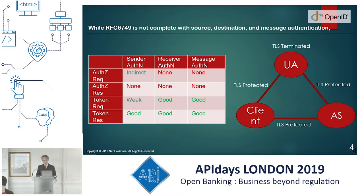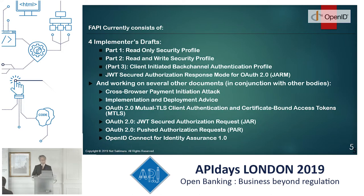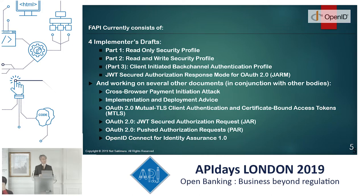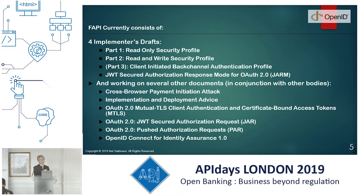What FAPI tries to address is to secure all these points and make them green. We have four implementer drafts. Implementer drafts means that the IPR is fixed and it's mostly done, but we still need to implement and get feedback from implementers to fix or fine-tune. At the OpenID Foundation, we always do multiple implementer drafts, incorporating implementation experiences. We write the specification in human language, trying to be precise, but there can still be some difference in interpretation which may cause interoperability issues.